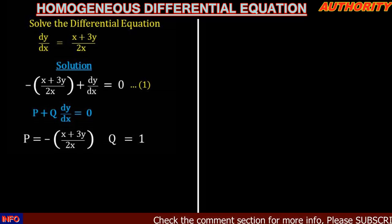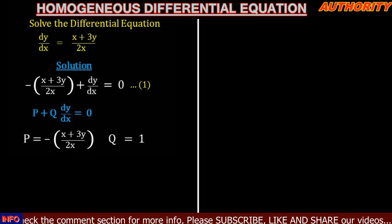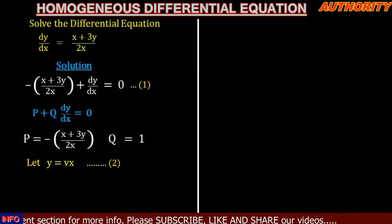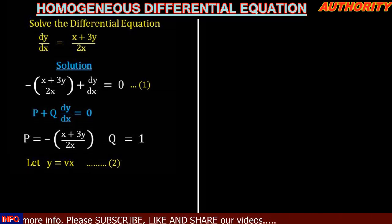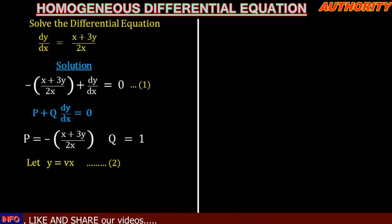So here, our P is minus (x + 3y)/(2x) and our Q is equal to 1. This fits the form of a homogeneous equation — let's call it equation 1. Now we let y equal vx.